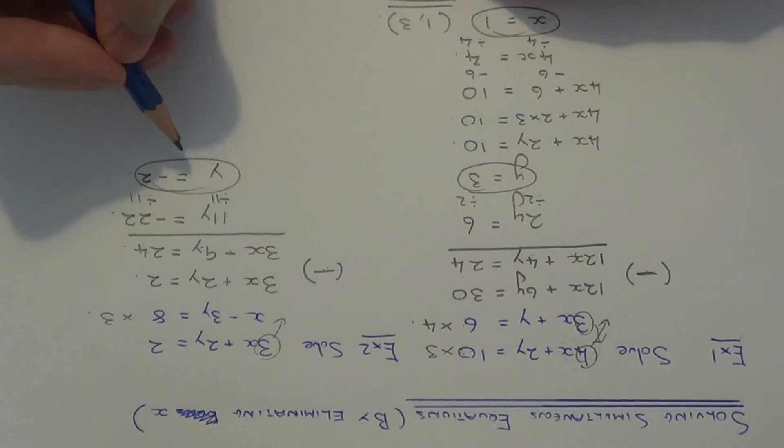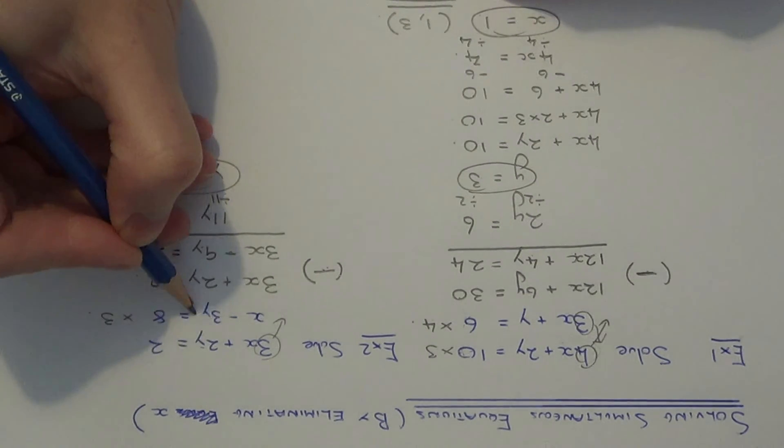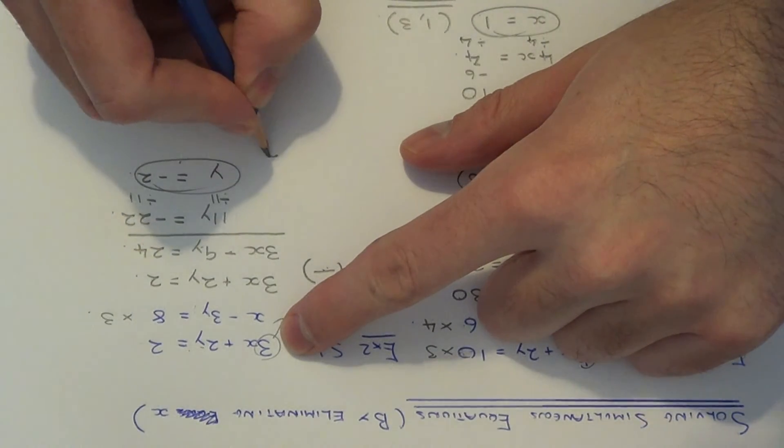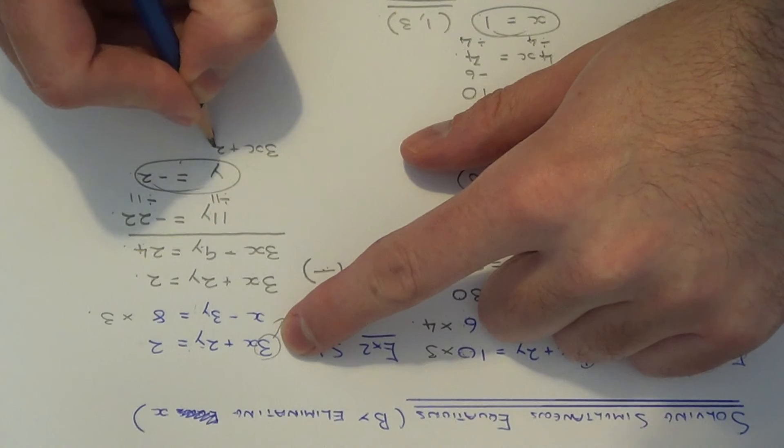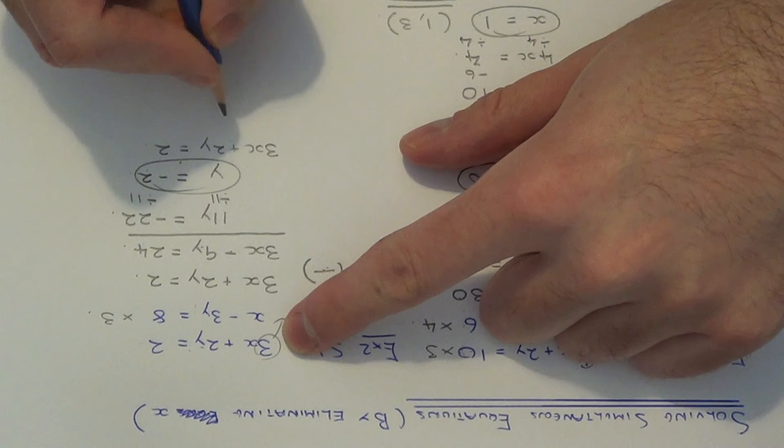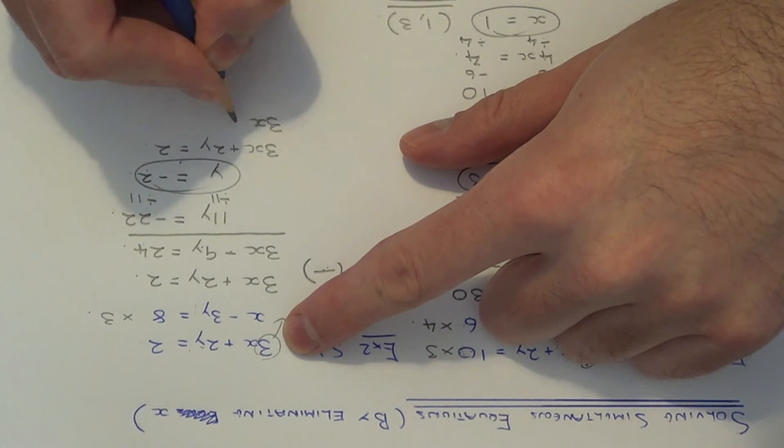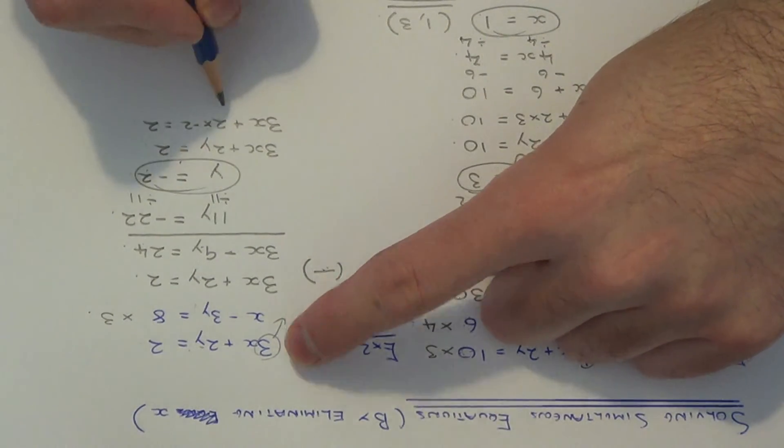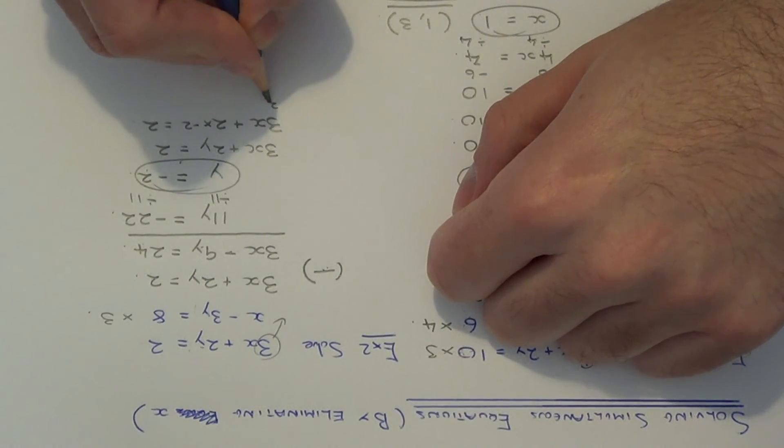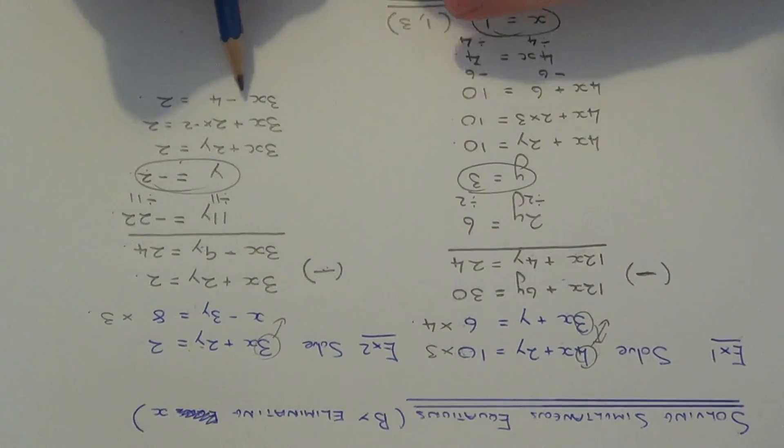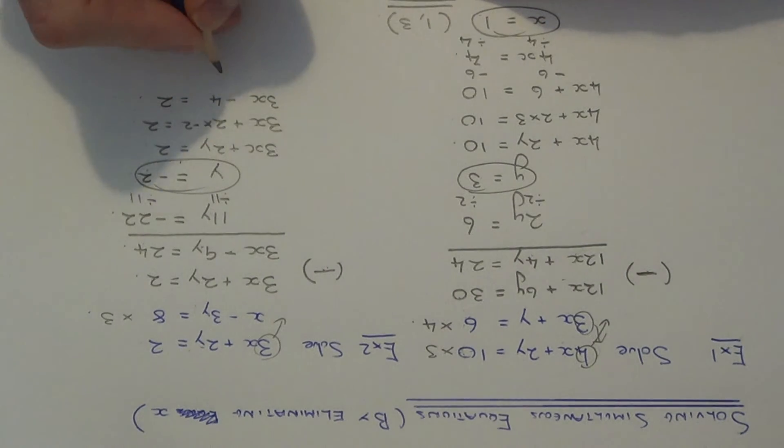So again, substitute this value back into one of the first two equations. Let me go with the first equation again. So 3x plus 2y equals 2. If we substitute in y equals minus 2, you'll get 3x plus 2 times minus 2 equals 2. So 2 times minus 2 is minus 4. So we've ended up with the equation of 3x minus 4 equals 2.